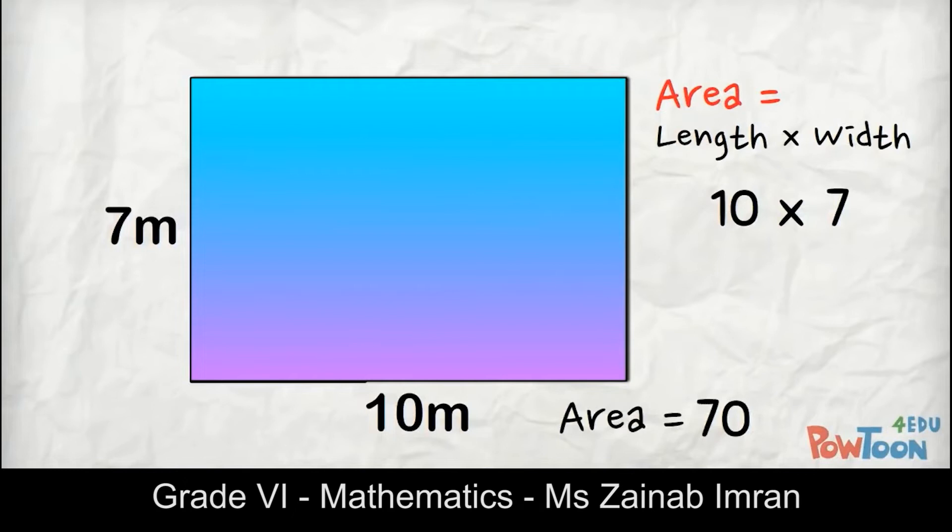Here's one last rectangle. The length is 10 centimeters and the width is 4 centimeters. Area is length times width, so 10 times 4 is 40. The area is 40 centimeters squared.